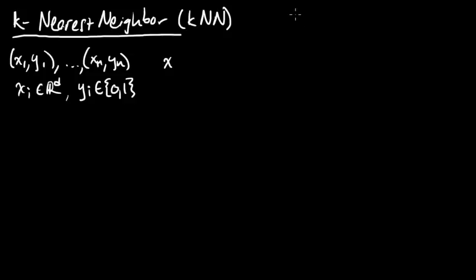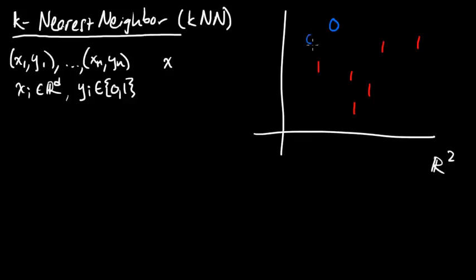Let me illustrate this with an example here. Say we've got these points in, let's suppose that d is 2, so this is R2, the plane. And maybe I've got some points, let's draw the 1s in red, so maybe we've got some 1s here, and I'll draw in blue the 0s.